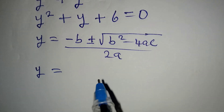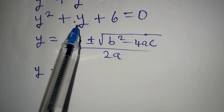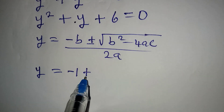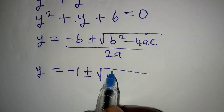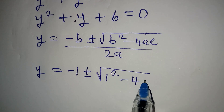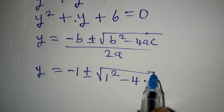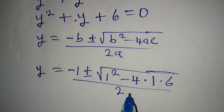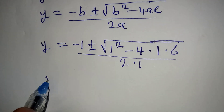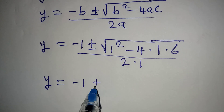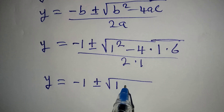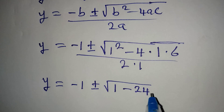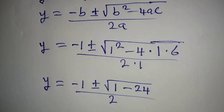The formula is y = (-b ± √(b² - 4ac)) / 2a. Our b is 1, the coefficient of y, so we write -1 ± √(1² - 4 × 1 × 6), all over 2 × 1. Continuing, y = -1 ± √(1 - 24), all over 2.